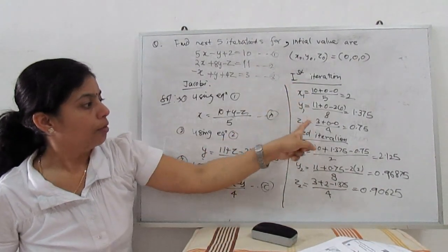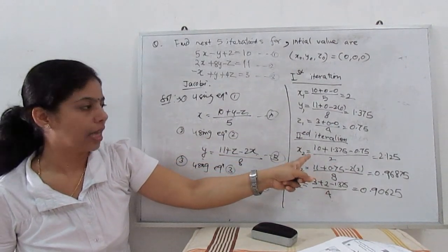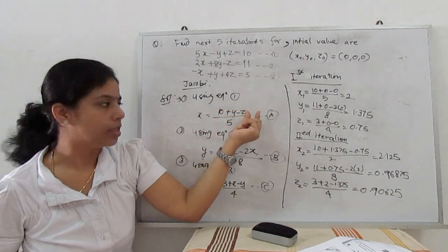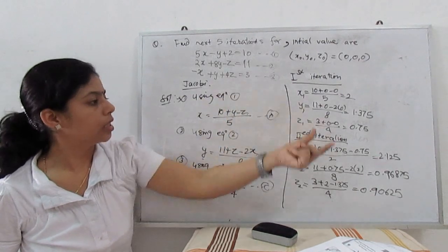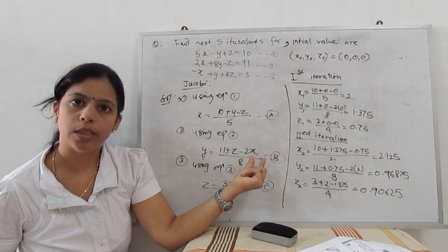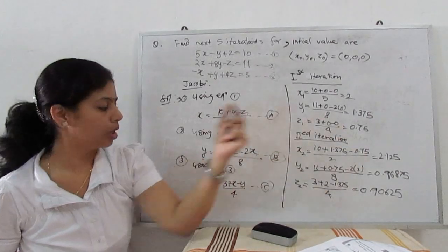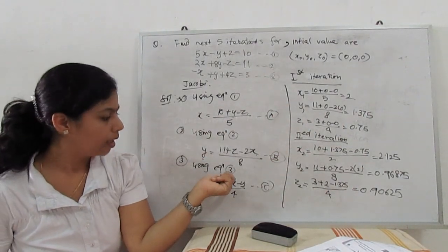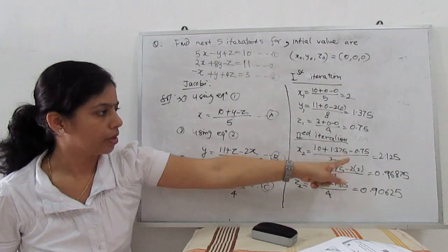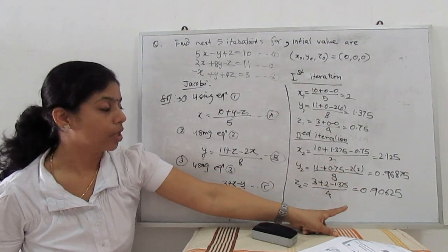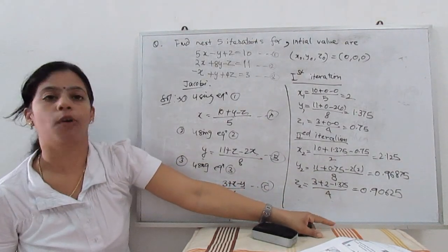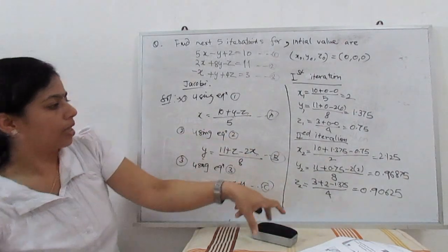The new set of values x₁, y₁, z₁ is used for the second iteration. For the second iteration: x₂ = (10 + y₁ − z₁) / 5, y₂ = (11 + z₁ − 2x₁) / 8, and z₂ = (3 + x₁ − y₁) / 4. Substituting these values gives us x₂, y₂, and z₂. Then we go for the third iteration with the same process.